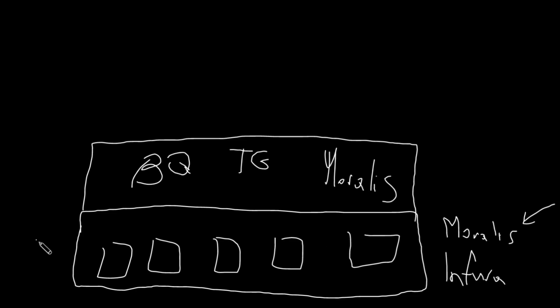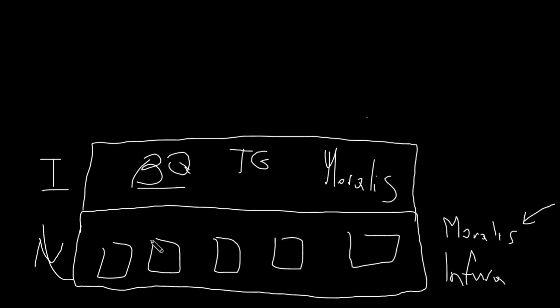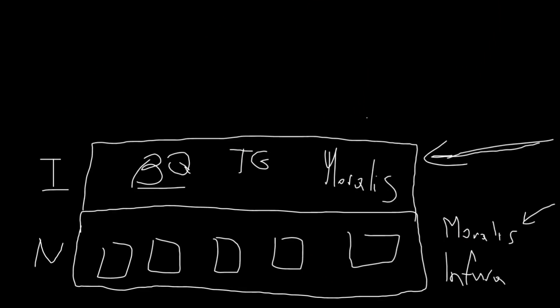So this is the second layer — the index level — where all data is indexed and you can also query it. The beauty here is that when you're speaking to BigQuery, Moralis, or any other provider of indexed data, you don't even have to care about the nodes. It's all abstracted away. You're just speaking to a much nicer, much easier-to-use API to get everything you need in your application. Abstraction is very important in all tech stacks, and especially in crypto because it becomes very complicated very quickly. The good thing is that we do have tools that make it very easy.